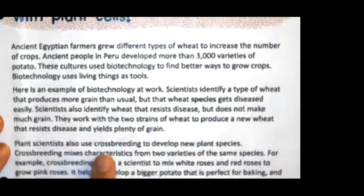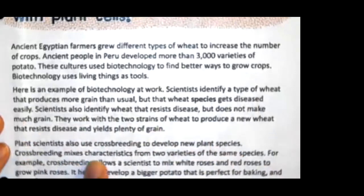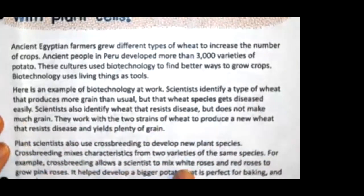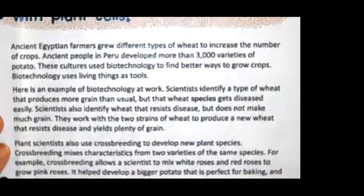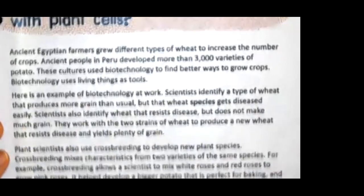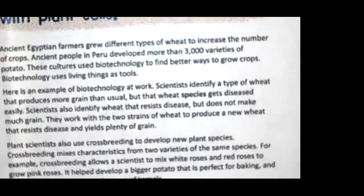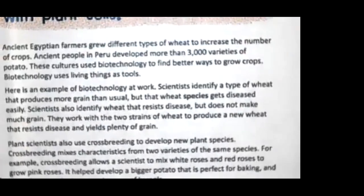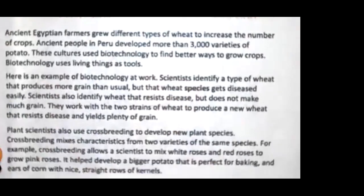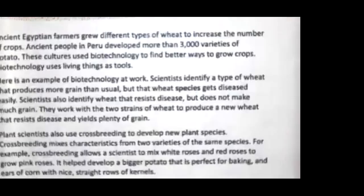Plant scientists also use crossbreeding to develop new plant species. Crossbreeding mixes characteristics from two varieties of the same species. For example, crossbreeding allows scientists to mix white roses and red roses to grow pink roses. It helped develop a bigger potato that is perfect for baking and ears of corn with nice straight rows of kernels. When you think about GMO — genetically modified organisms — it's actually a good thing, because they're taking the bad things about one plant and the good things about another plant and mixing them together.